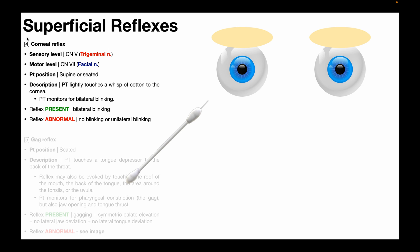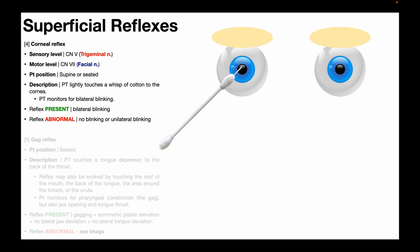To assess for the presence of the corneal reflex, the patient will be positioned either in supine or seated, because both positions allow easy access to make contact with the cornea. The PT will lightly touch a wisp of cotton to the cornea — normally a q-tip with one little wisp coming off the end, something very soft, not significantly irritating, and pretty much sterile. You're going to monitor for bilateral blinking, which is what we expect if this reflex loop is intact. We bring that wisp in contact with the cornea and we get that bilateral blinking.